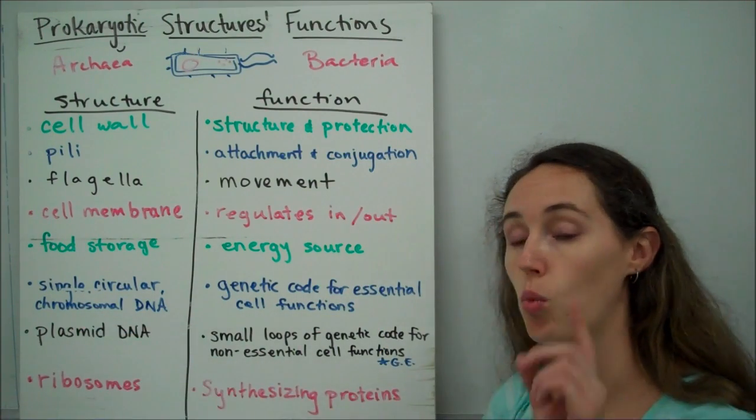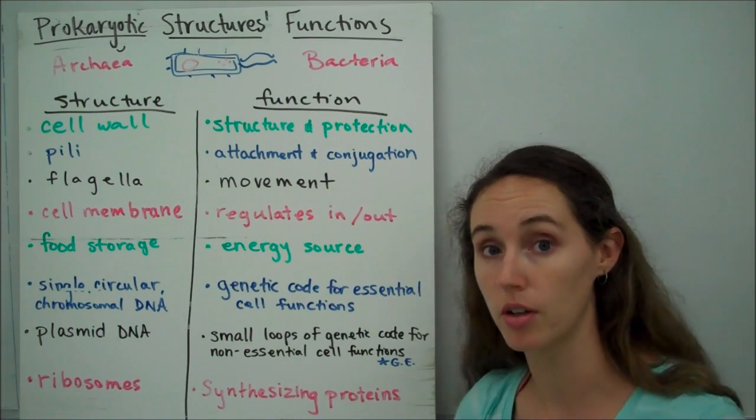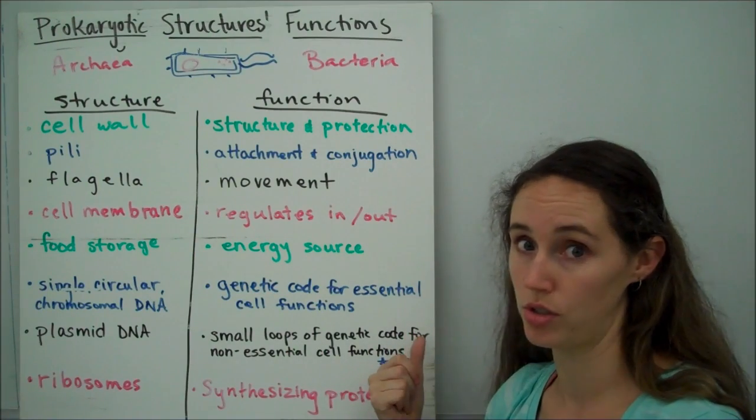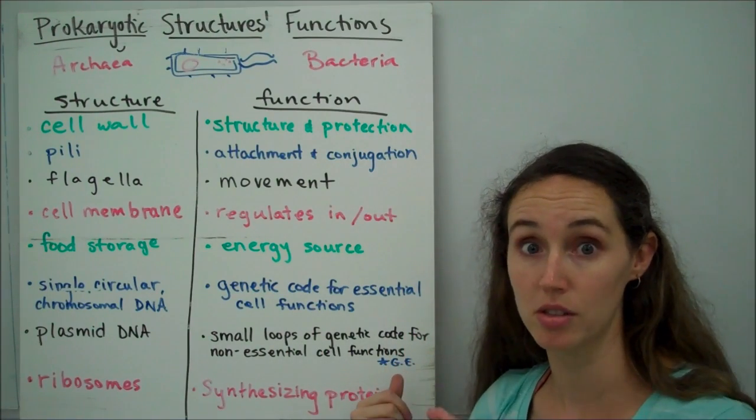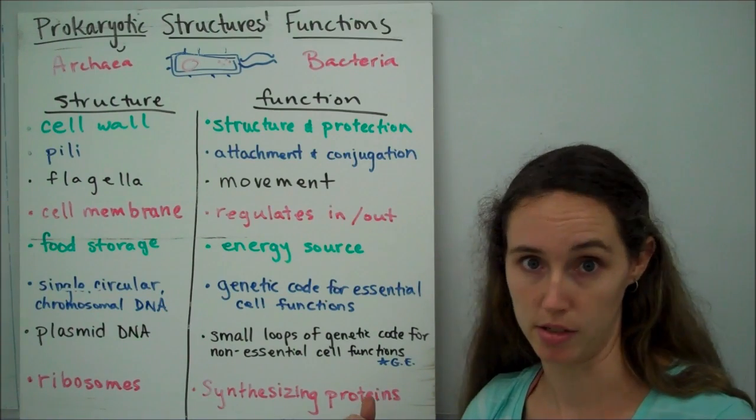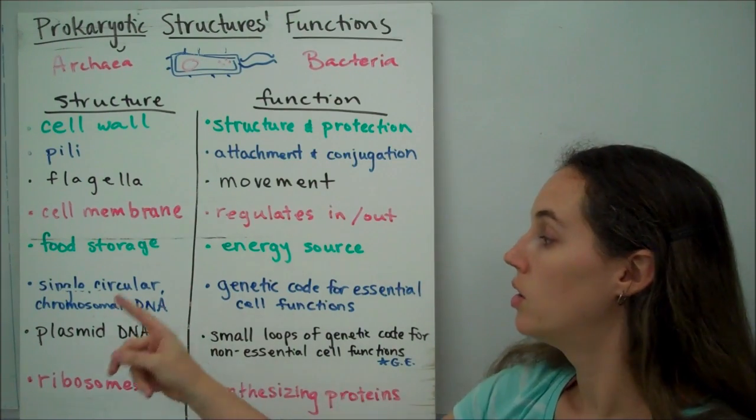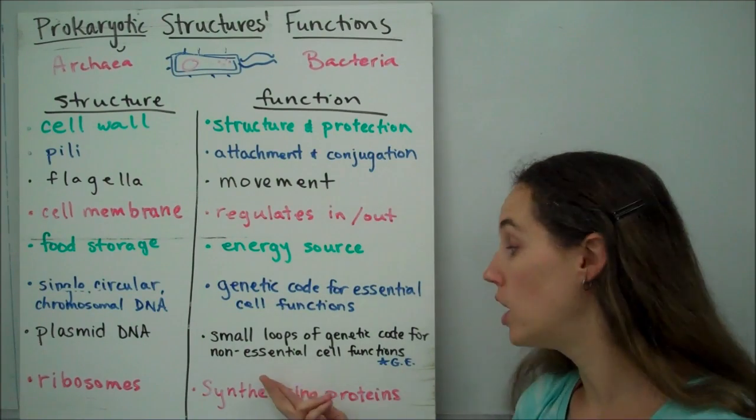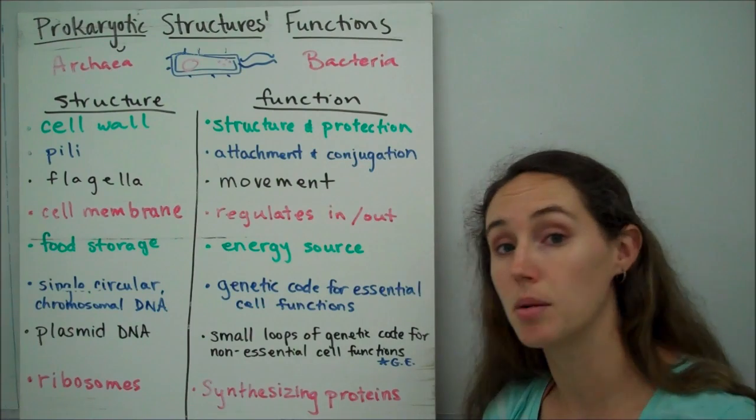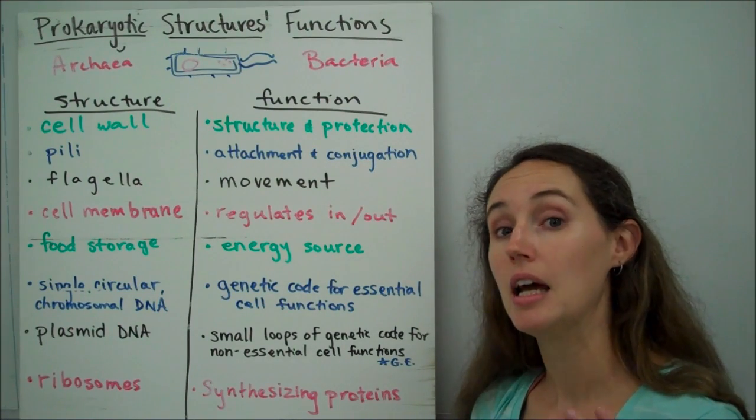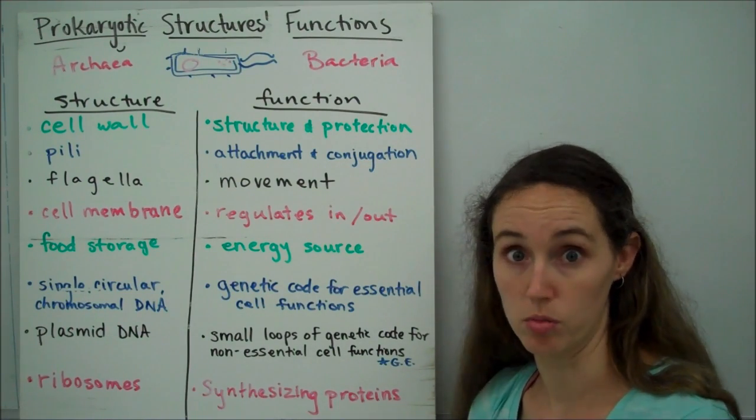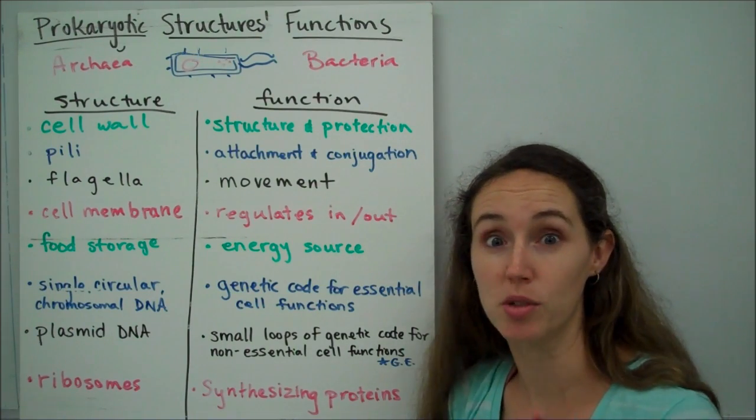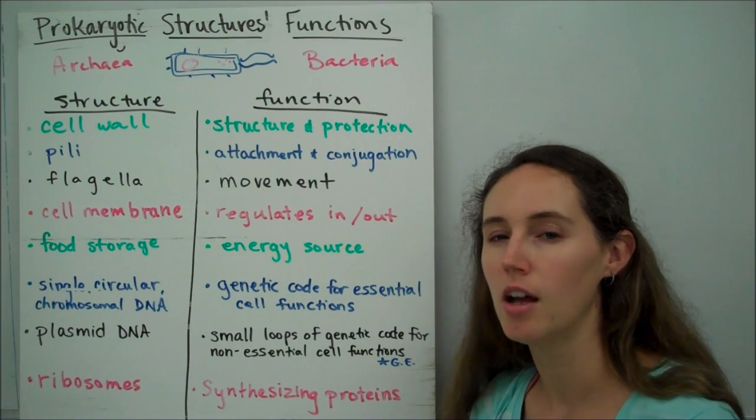Again, all prokaryotes have one singular, circular piece of chromosomal DNA, and it's going to code for all of the essential cellular functions. So, without this, we're dead. By we, I mean bacteria and archaea. Whereas, plasmid DNA are smaller loops of DNA that code for non-essential cell functions, like antibacterial resistance. What's great about plasmids, and we're going to learn more about this later, is they play a crucial role in genetic engineering. Humans have figured out how to manipulate plasmids for our benefit.